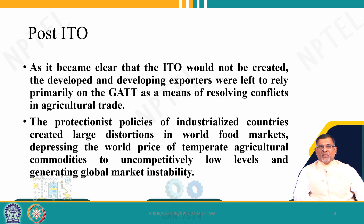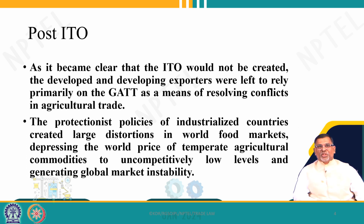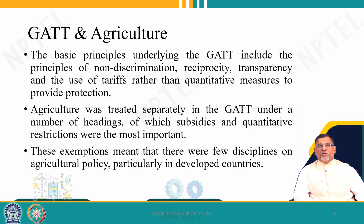Why is it known as distortions? Because artificial markets are created because of subsidies. Developing countries were not able to compete with these artificially made prices, which depressed the world prices and world markets of agricultural commodities. In short, developing countries' products were highly uncompetitive with regard to developed country products because of this artificial creation of markets.